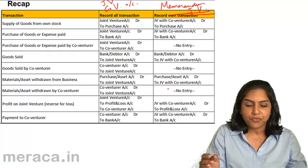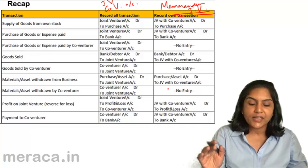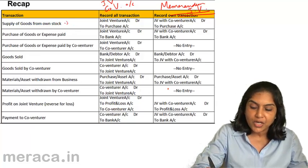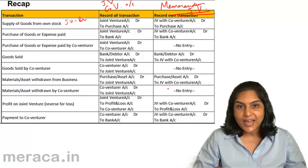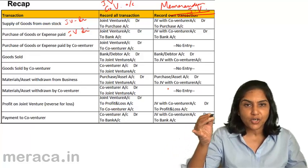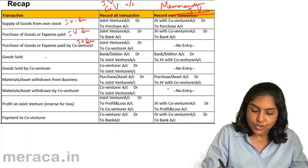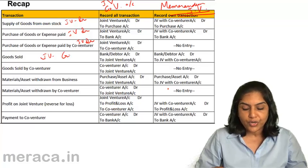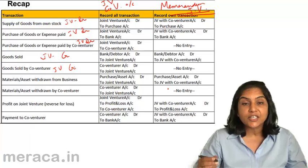Let's understand the logic of transactions before looking at the accounting entries. Supply of goods from own stock means goods are being supplied to the joint venture — logically, joint venture would be debited. Purchase of goods or expense paid for the joint venture — again, joint venture should be debited. Purchase of goods or expense paid by Bikash (in the books of Aakash) — joint venture would still be debited. If goods are sold, then joint venture is credited.